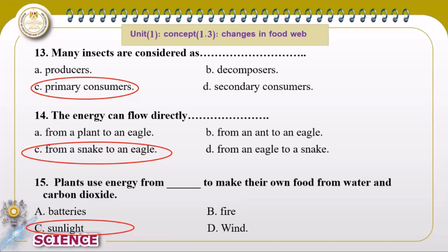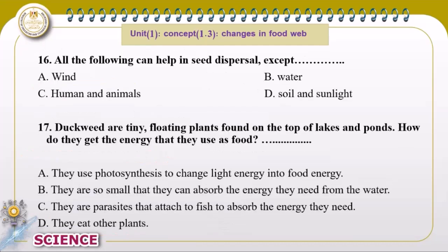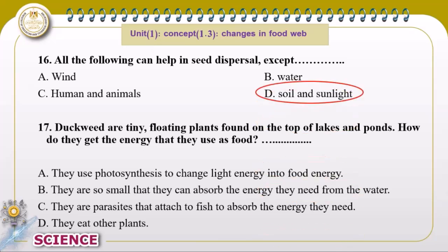Plants use energy from sunlight to make their own food. Regarding seed dispersal: wind, water, humans, and animals help in seed dispersal, but soil does not help — so soil is the wrong answer.